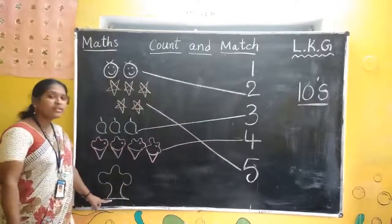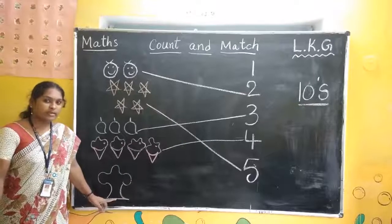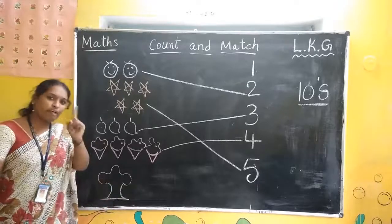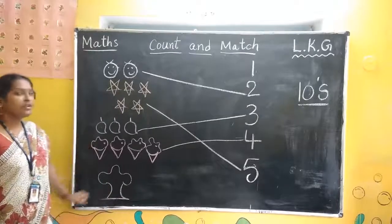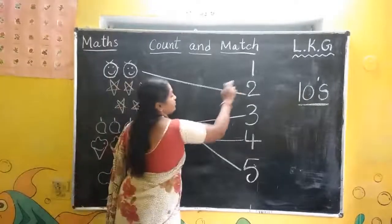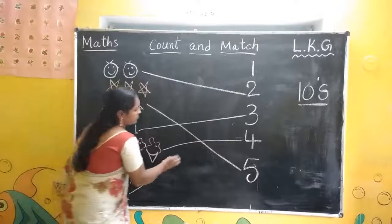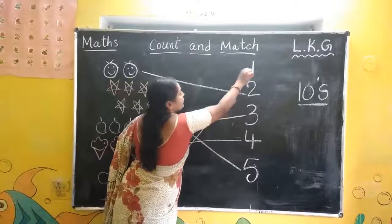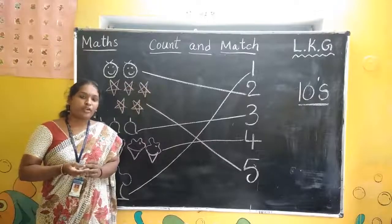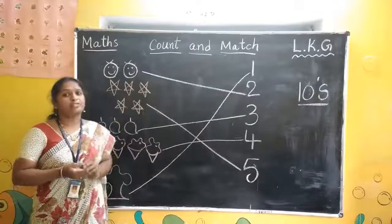Now, what are these? These are trees. How many trees are there? Only one tree. Where is number one? Here. Now, draw the line — tree to number one. Did you understand, children, how to count and match?